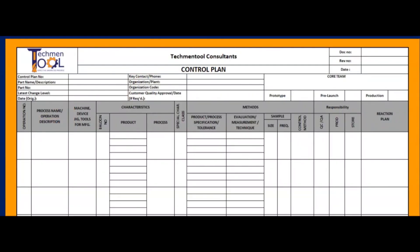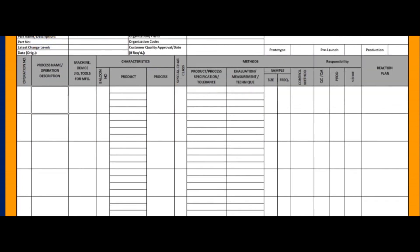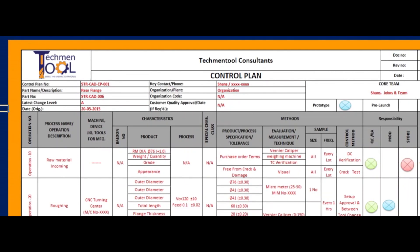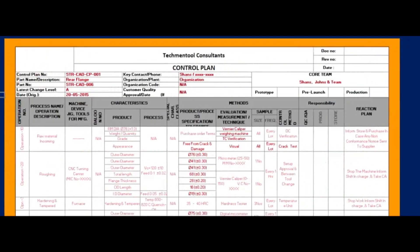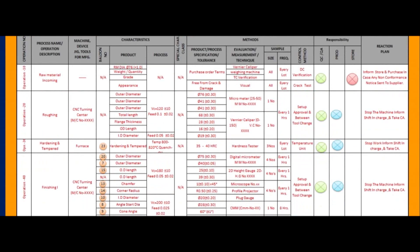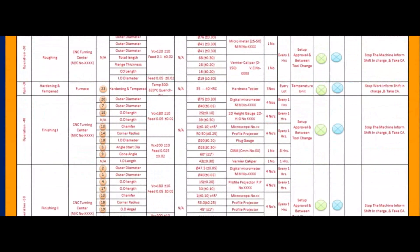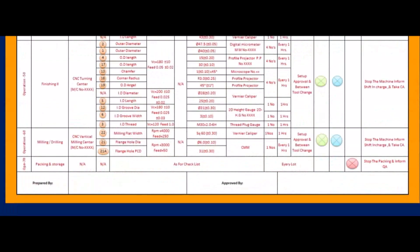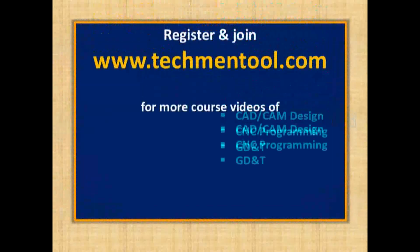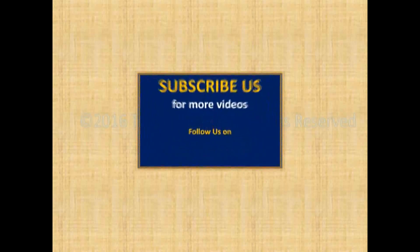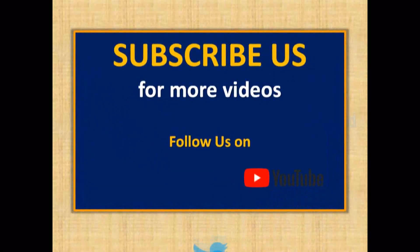This is the sample format of a control plan. It consists of information about product details, organization name, type of job, team details, operation description, machine details, characteristic information, method of control, responsible persons, and reaction plan.